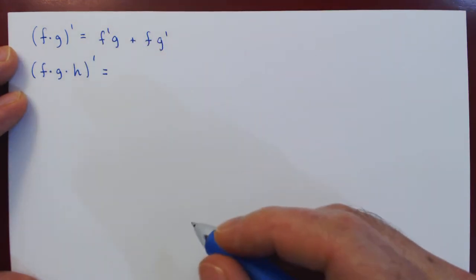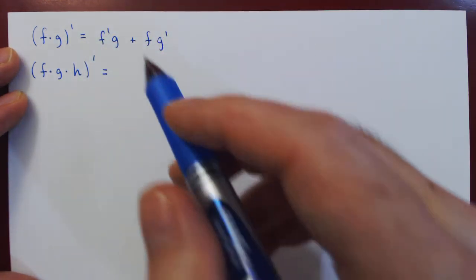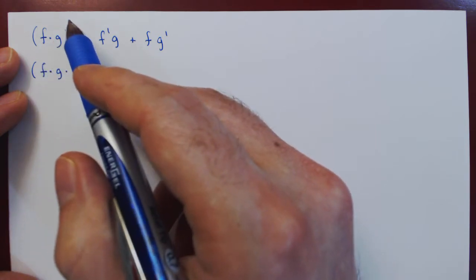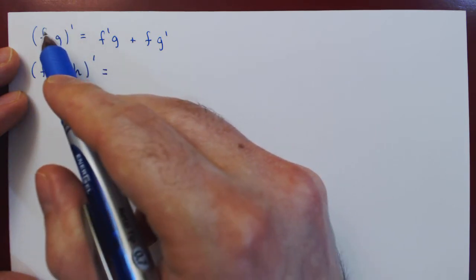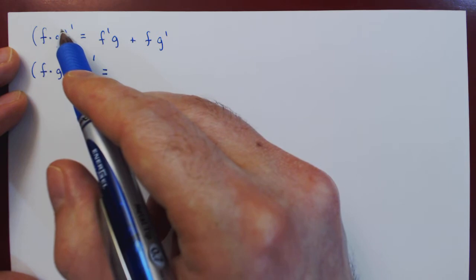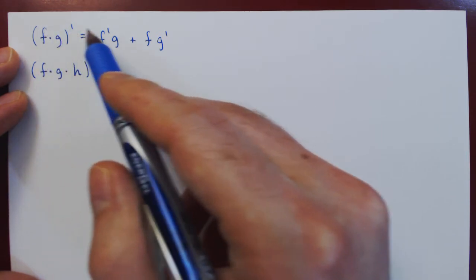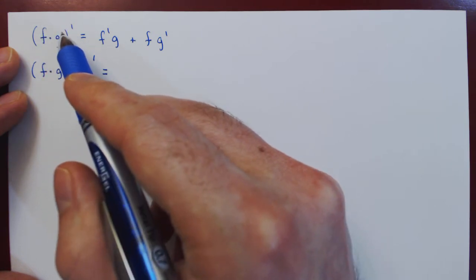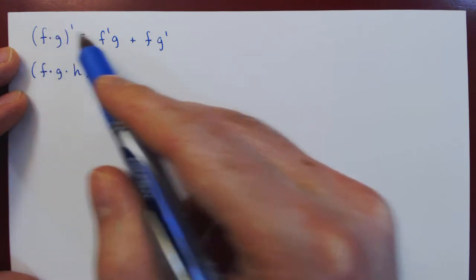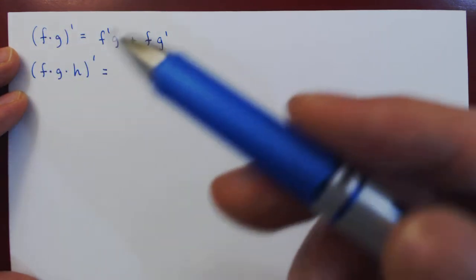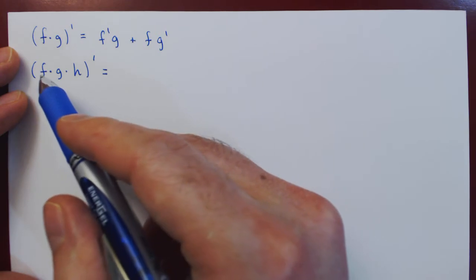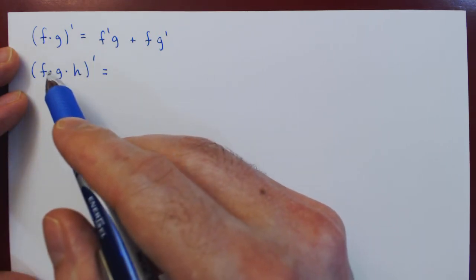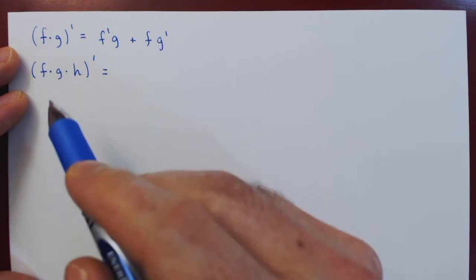The rule is remarkably simple. If you look back at the single product rule, think of the derivative jumping on the first function, then on the second function. So we have f prime g as the first term, then the derivative jumps on the second function: plus f g prime.